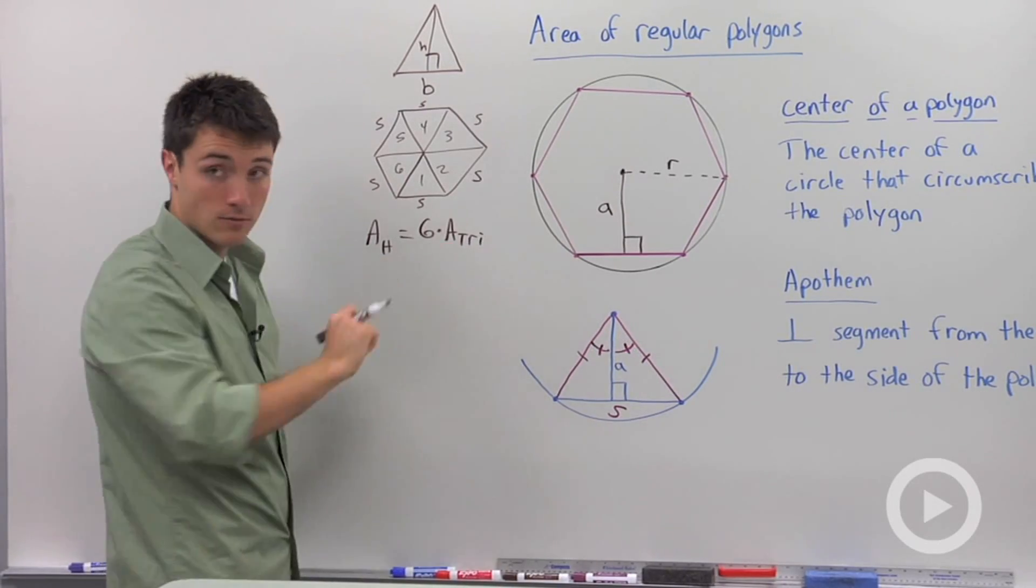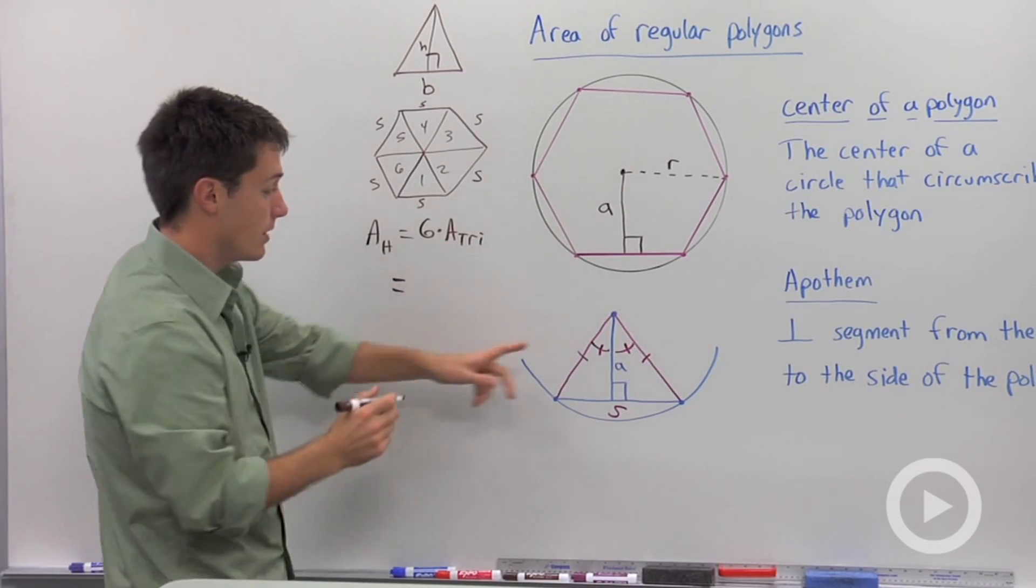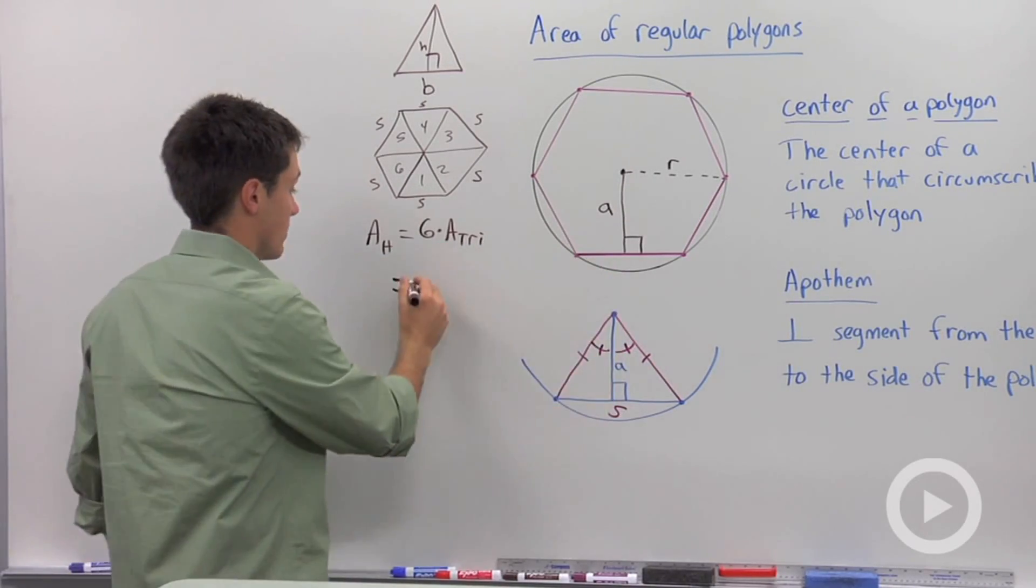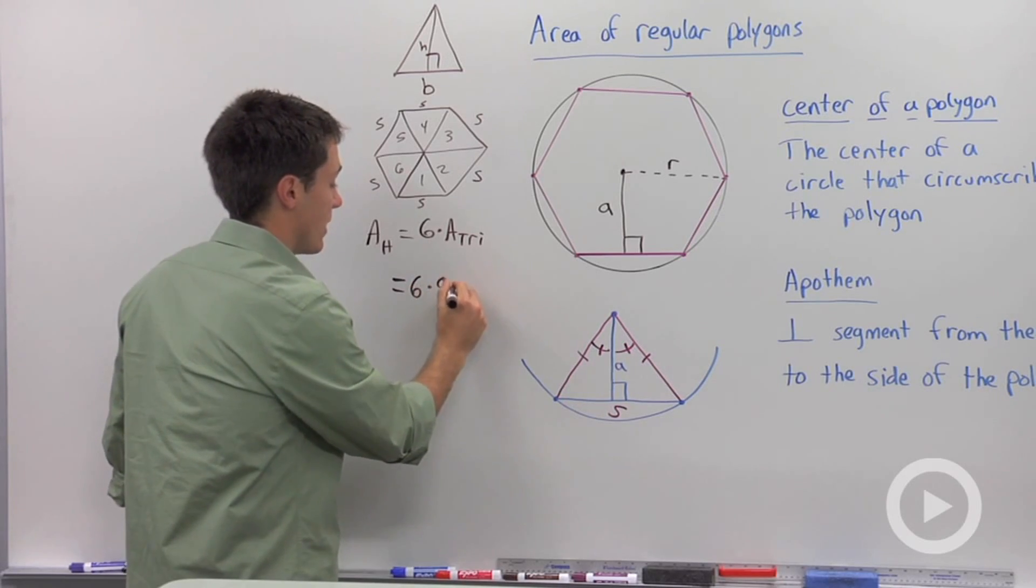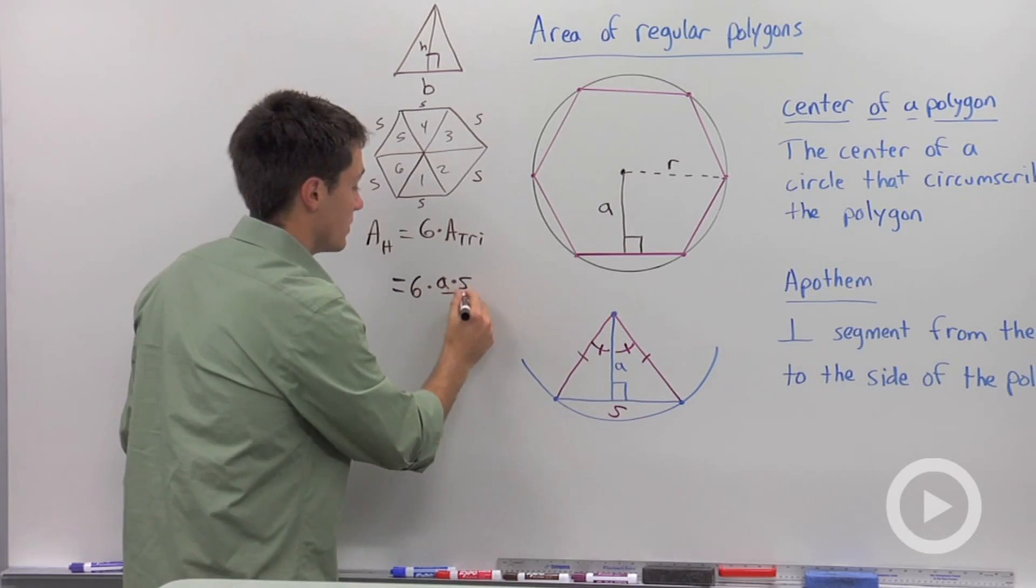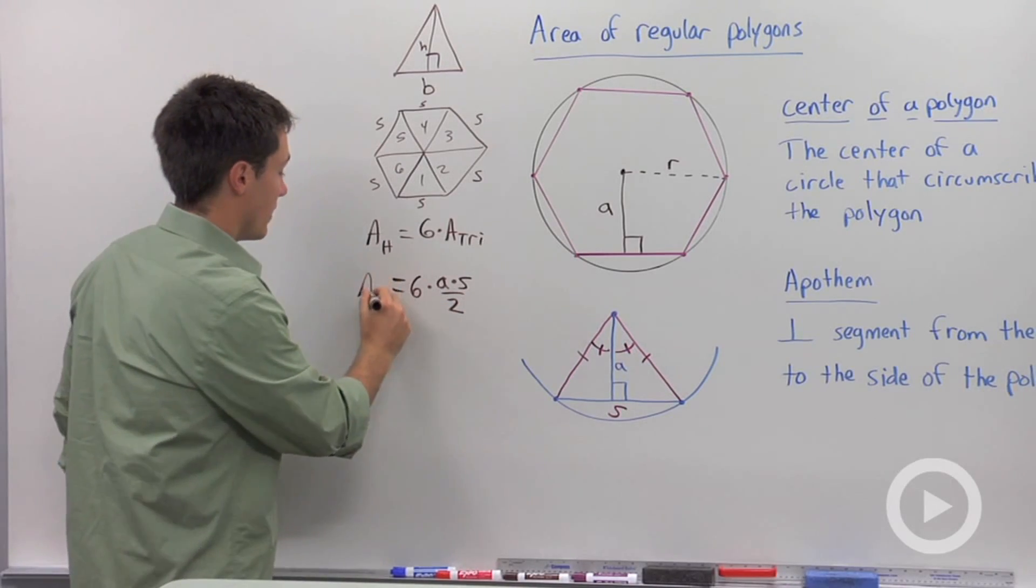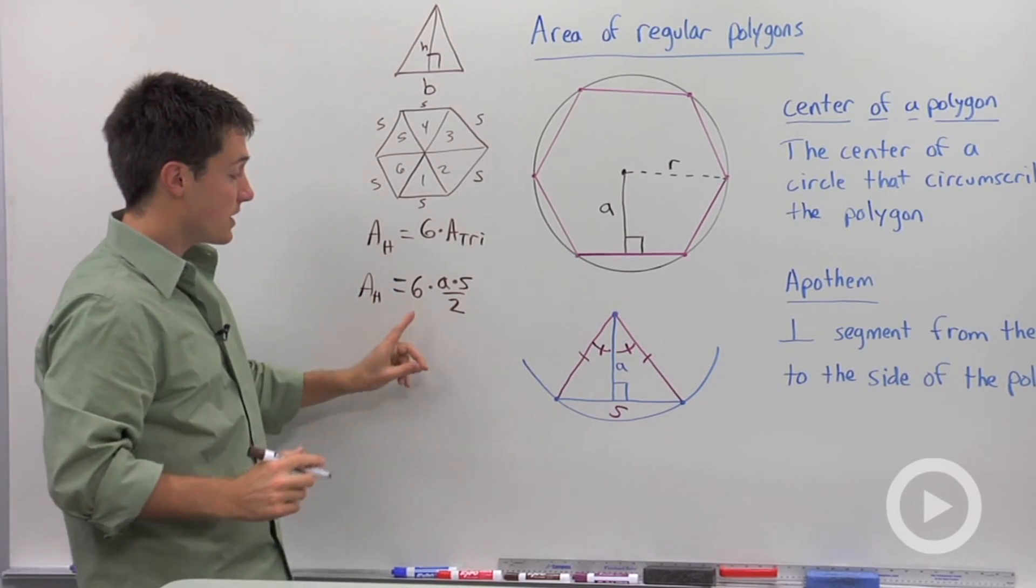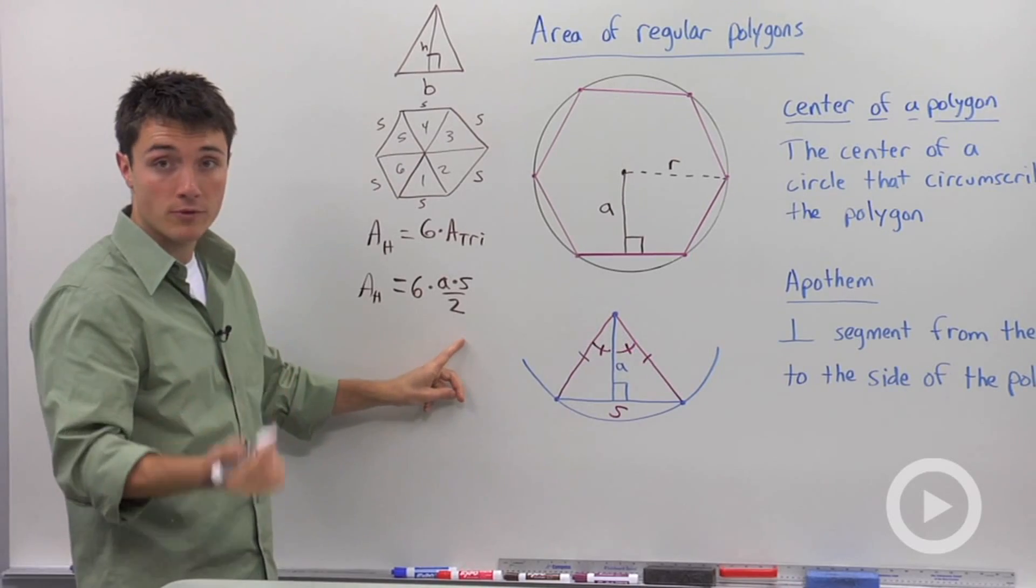So the area of this triangle is going to be the apothem, which is the height, so I'm going to say six, times the apothem, times the base, which is S, divided by two. So the area of a hexagon is equal to six times the area of one of your triangles.